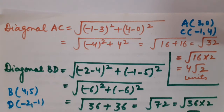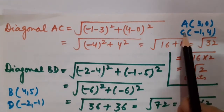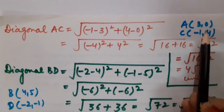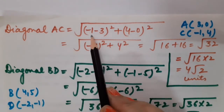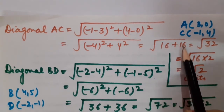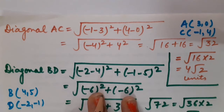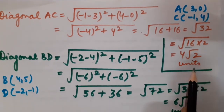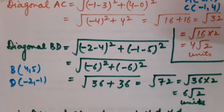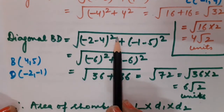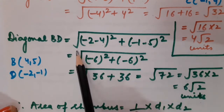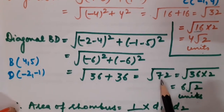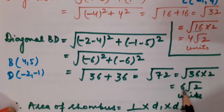Applying the distance formula, AC = √((−1−3)²+(4−0)²) = √(16+16) = √32 = √(16×2) = 4√2 units. For diagonal BD: BD = √((−2−4)²+(−1−5)²) = √(36+36) = √72 = √(36×2) = 6√2 units.